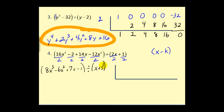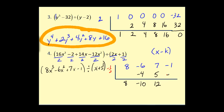Now perform synthetic division: coefficients are eight, negative six, seven, negative one, and k is negative one-half. Bring down the eight, multiply by negative one-half giving negative four, add, multiply by k giving positive five, add, multiply by negative one-half giving negative six, and the remainder is negative seven. Degree three divided by degree one gives the degree two quotient: eight x squared minus ten x plus twelve, minus seven over x plus one-half.